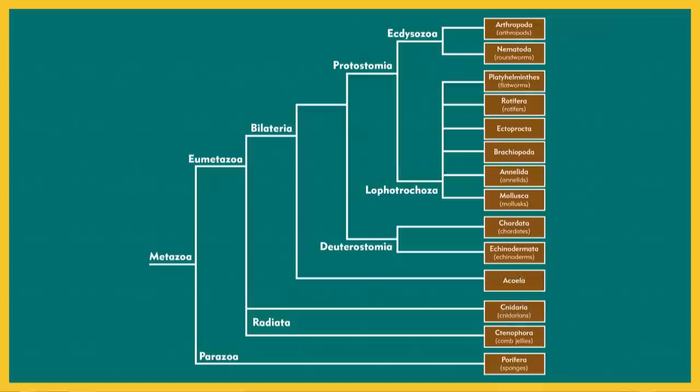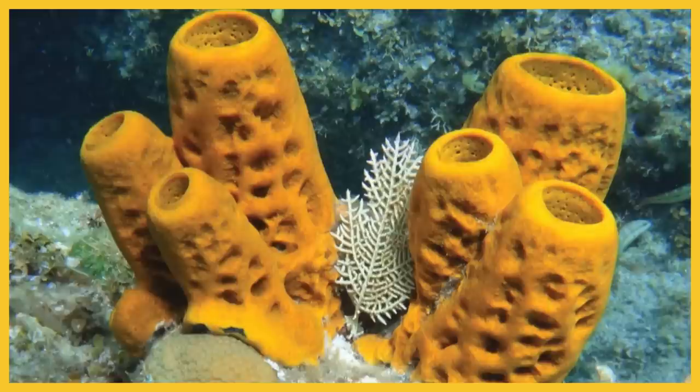Our first stop on the invertebrate tour: sponges. Sponges are in the phylum Porifera, and they are considered basal animals. This means their lineage is the closest to the original common ancestor. Because of this, sponges aren't too fancy — they lack true tissues and are sedentary, meaning they don't really move on their own. But don't count sponges out; they're super cool invertebrates in their own right, and really useful in terms of human health. Sponges provide many compounds for human antibiotics, especially for penicillin-resistant strains of certain bacterial infections.